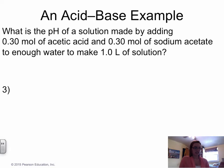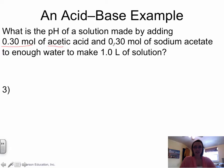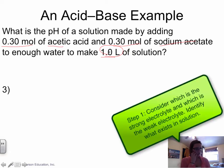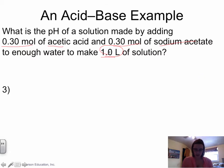Let's look at an example — this is an example exercise in your book, so if you need more step-by-step guidance, refer there. The problem asks: what is the pH of a solution made by adding 0.30 moles of acetic acid and 0.30 moles of sodium acetate in enough water to make one liter of solution? That's important because we need molarity for the ICE table, and with one liter the molarity calculations are easy. We need to go through a series of steps. First, consider the strong electrolyte and the weak electrolyte.